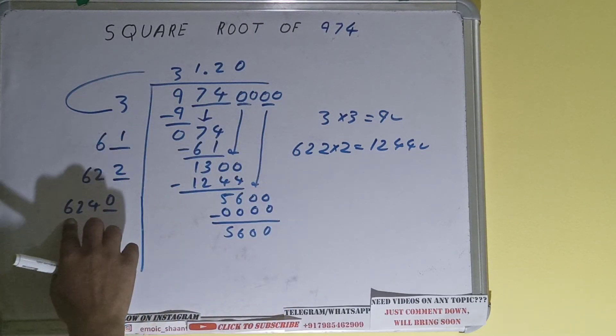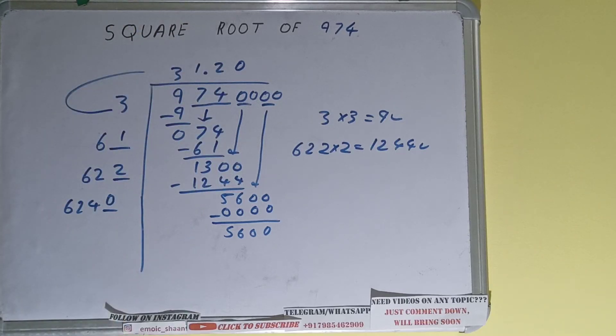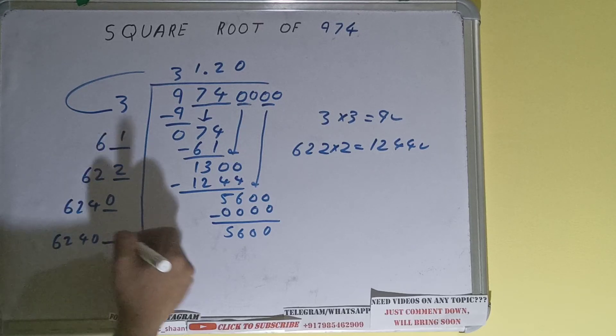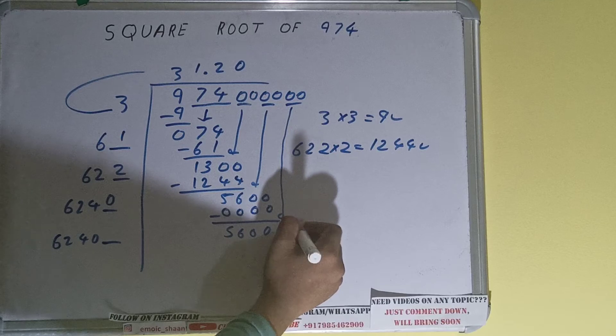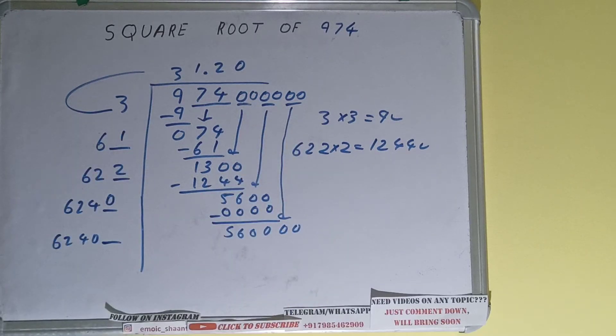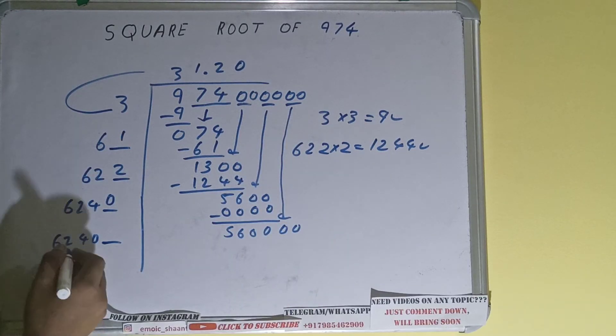Now 6240 into 0 we did, so add both: 6240 plus 0 will be 6240 and one digit extra. And this number we need to make it big, so bring the next pair down and it will become 5600. Now compare this 62 with this 560, so 62 times 9 is 558, right? So we can try 9 times.